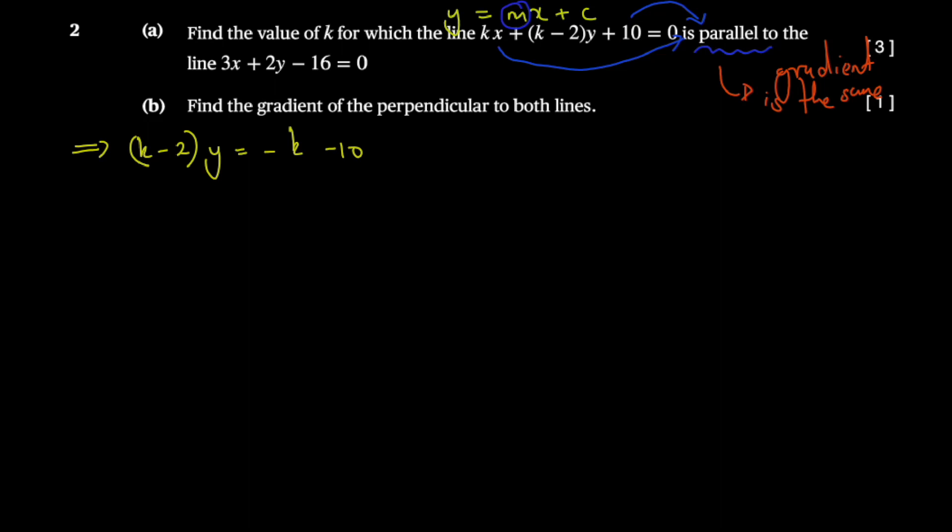Whenever a number skips an equal sign, it flips the sign. It becomes positive if it were negative; it becomes negative if it were positive. That's what we just applied here. Now we're just going to divide forward by k - 2.